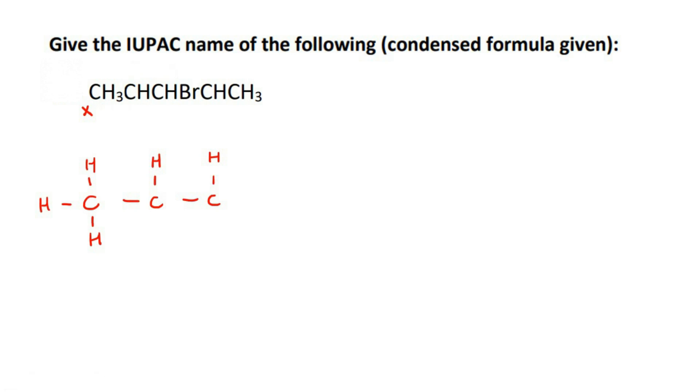But don't worry, we'll come back to that. Then there is a C connected to a Br and an H. That would be like something like that. And then there's a CH3. Now notice that this carbon and this carbon only have three bonds. So we can fix that by putting a double bond.